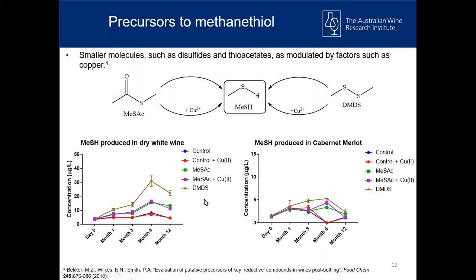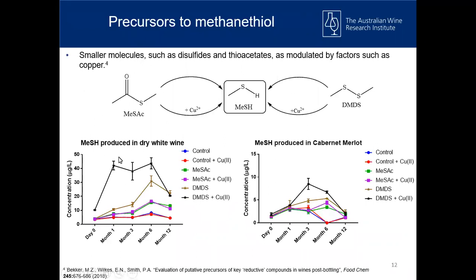When we added the disulfide to the wine, we saw a dramatic increase in methanethiol production, more so in the white than in the red. And the combination of dimethyl disulfide with copper produced even more methanethiol. This is quite important — if you have evaluated your wines and you do see some disulfides, it would be highly recommended to not add copper to your wines, because you'll see this dramatic increase in methanethiol production.